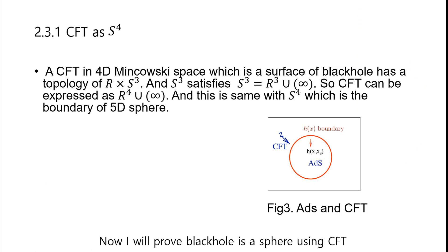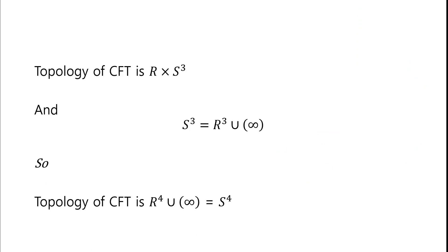Now I will prove black hole is a sphere within CFT. CFT is 4D Minkowski space, which means the surface of black hole has a topology of R multiplied by S³. And S³ satisfies S³ equals R³ plus infinity, so CFT can be expressed as R⁴ plus infinity. This is the same as S⁴, which is the boundary of a 5D sphere. Topology of CFT is R × S³, and S³ is R³ plus infinity, so topology of CFT is R⁴ plus infinity, which is S⁴.